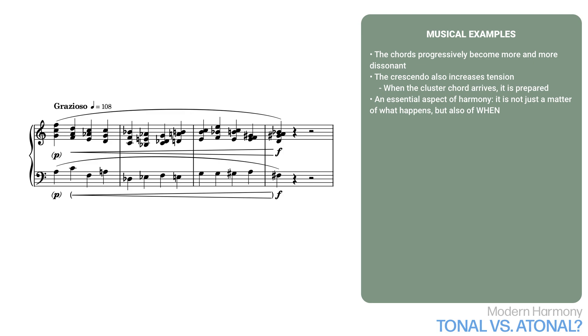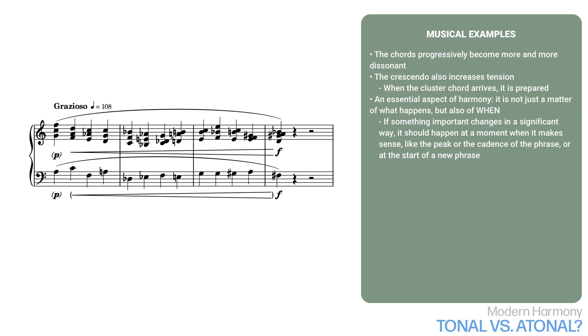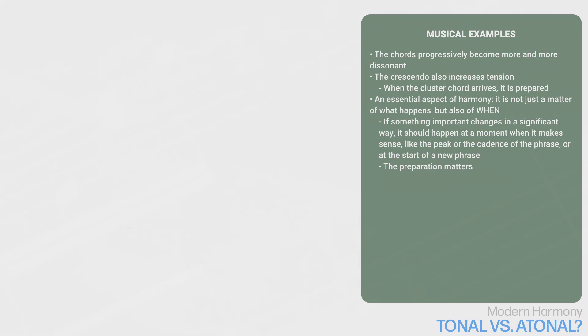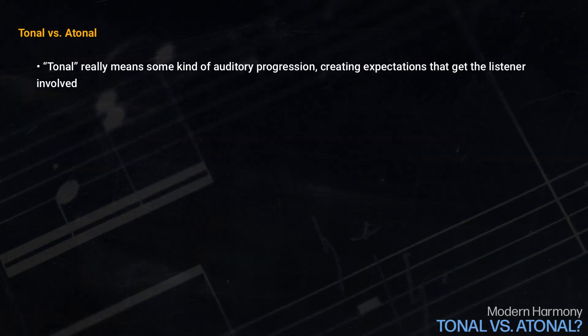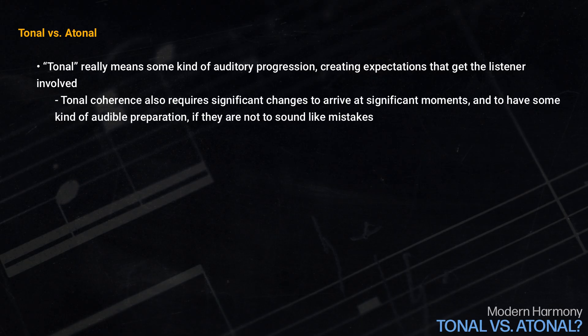These last examples point to an essential aspect of harmony — not just a matter of what happens, but also a matter of when. Something important that changes in a significant way should happen at a moment when it makes sense, like the peak or the cadence of the phrase, or at the start of a new phrase. Otherwise, it just sounds arbitrary. Also, the preparation matters. To sum up, tonal really means some kind of auditory progression — meaning expectations to get the listener involved. It does not necessarily require the beginning and the ending to have the same tonal center. Tonal coherence also requires significant changes to arrive at significant moments and to have some kind of audible progression, so they don't sound like mistakes.